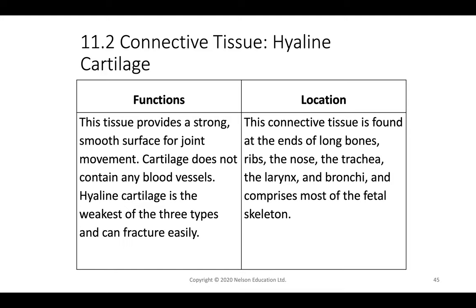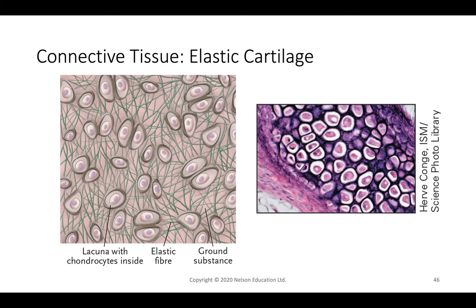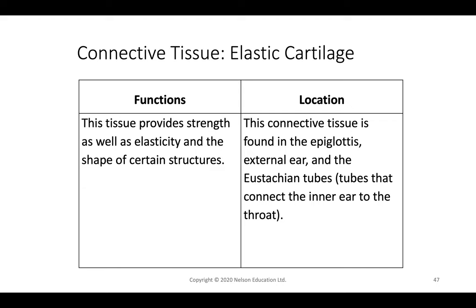Hyaline cartilage is strong and provides a smooth surface for joint motion, but it is avascular and the weakest of the three cartilage types — it can be fractured. Found at the ends of long bones, the ribs, nose, trachea, larynx, and bronchi. Most of the fetal skeleton is cartilage that will ossify into bone. Elastic cartilage is similar but has elastic fibers in the ground substance for additional elasticity.